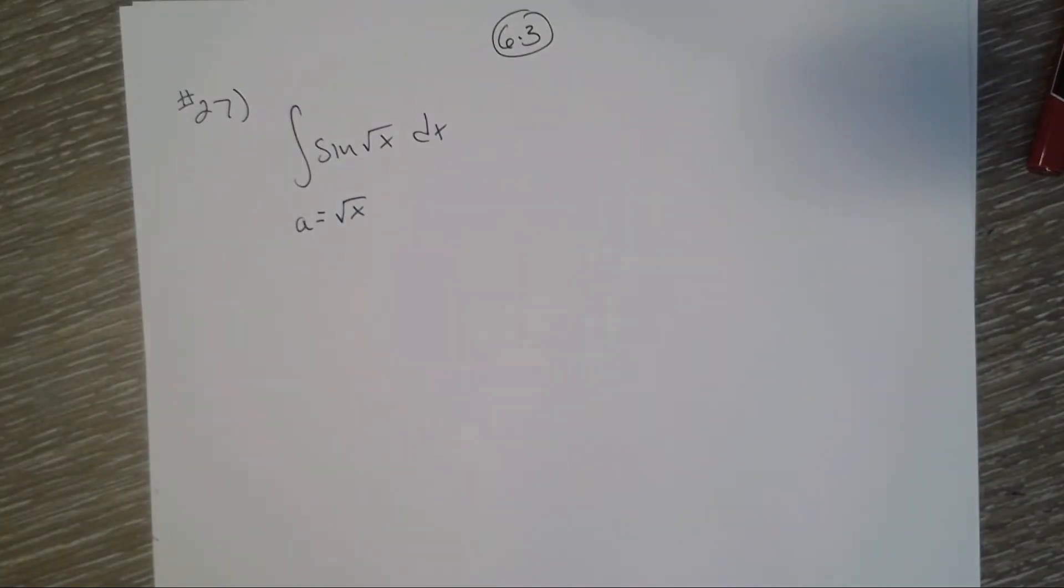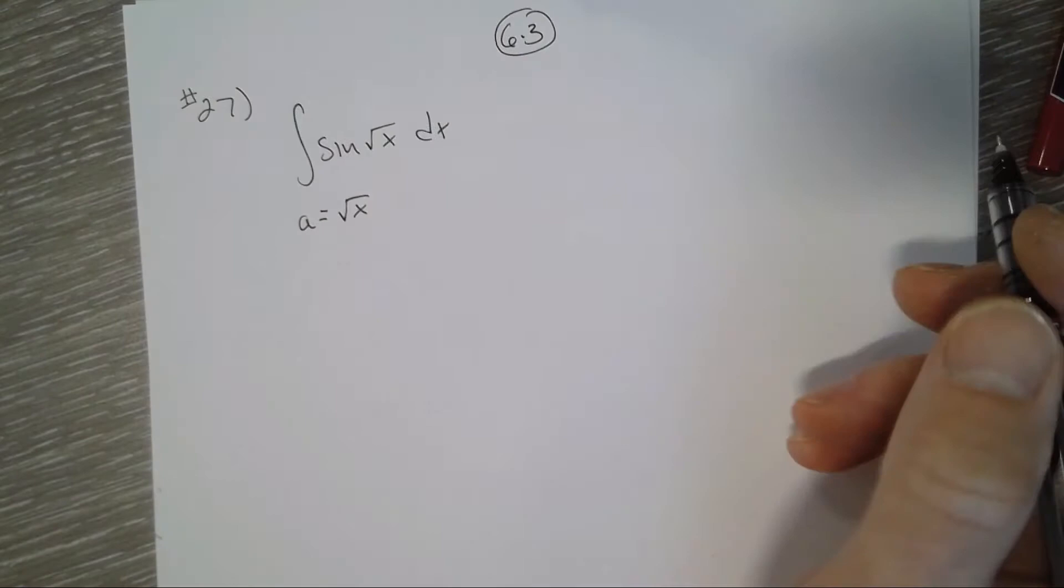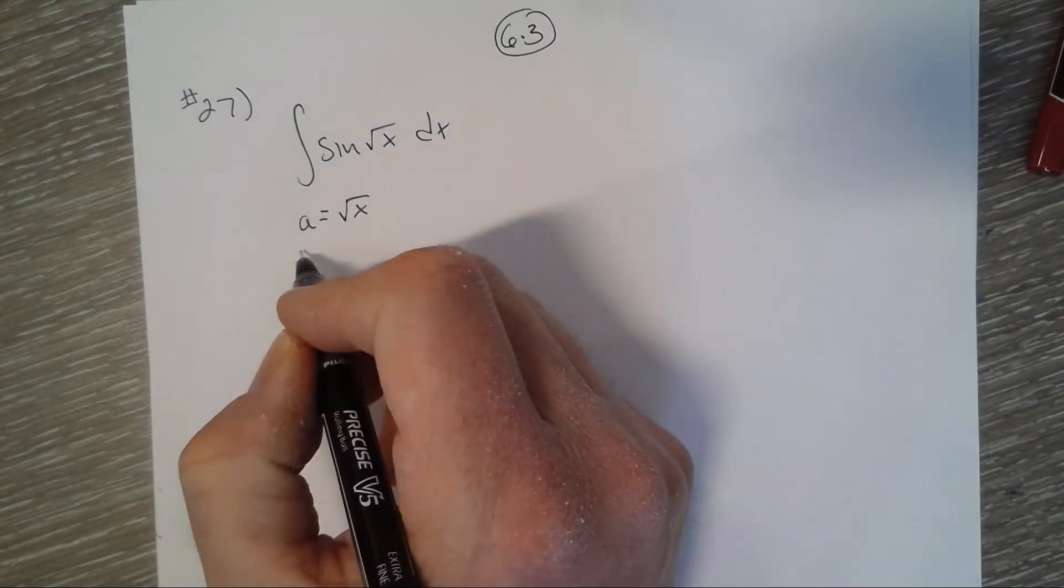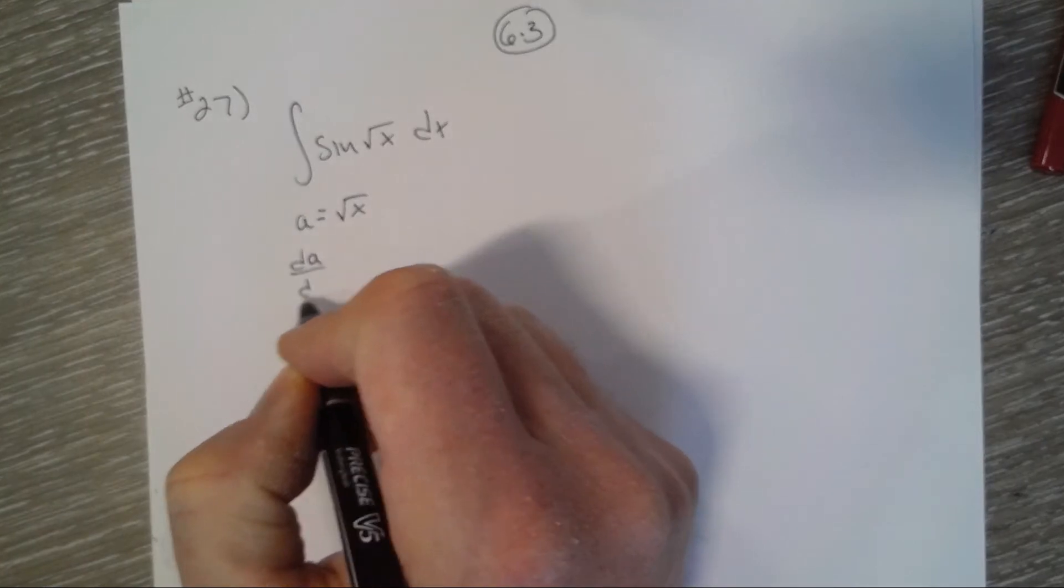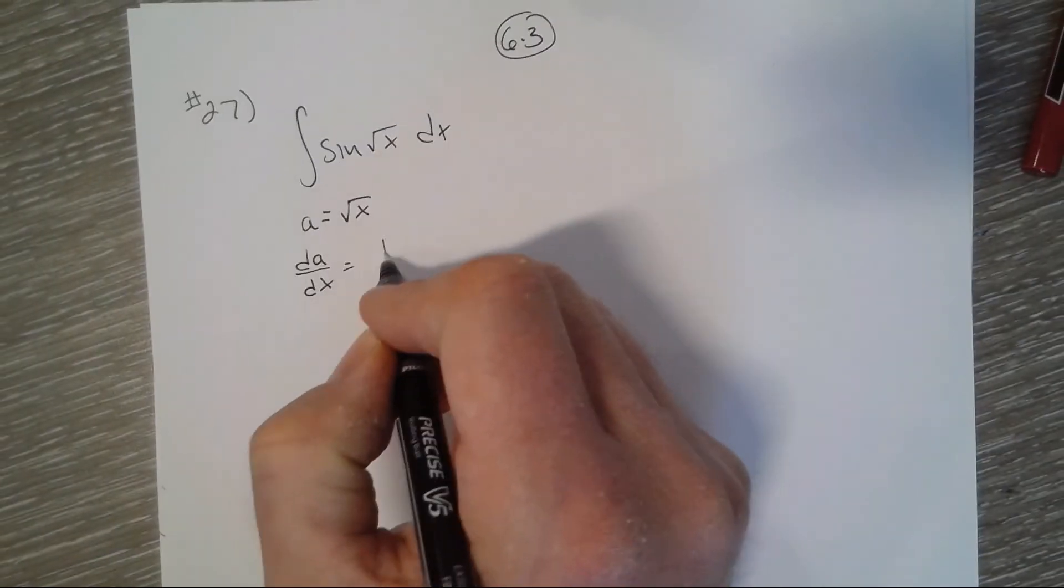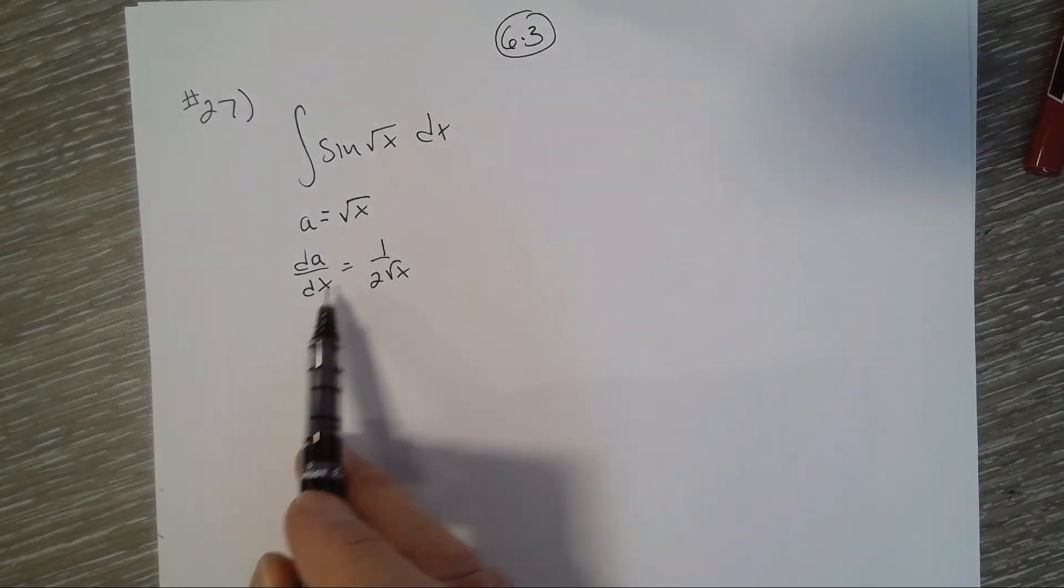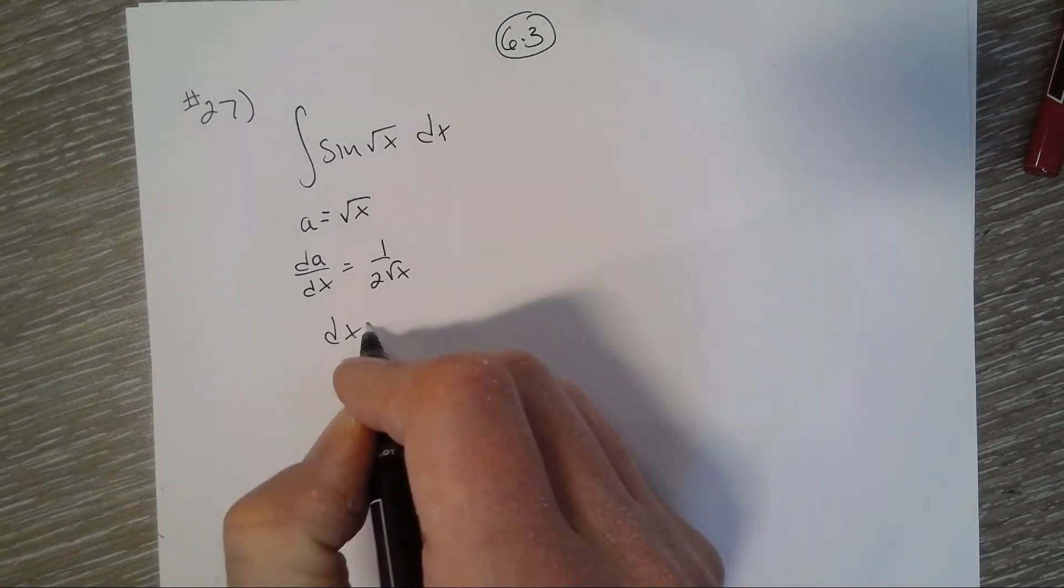I'm kind of convinced that might be the way to go based on the instructions. So remember, in u-substitution we are solving for dx. So we have to solve for a, dx. So dx equals 2 square root of x da.